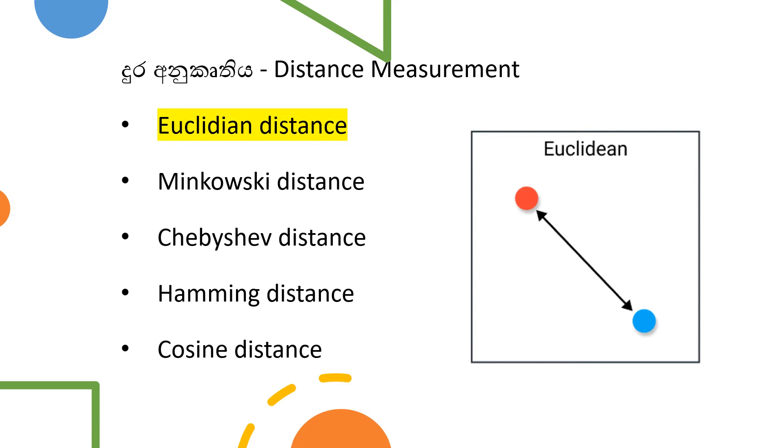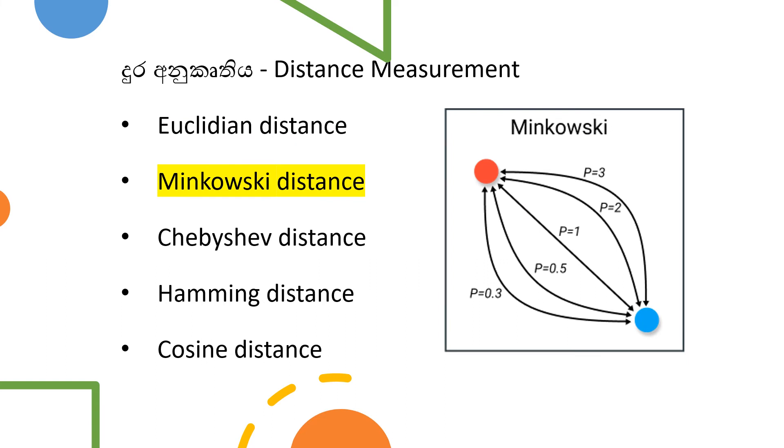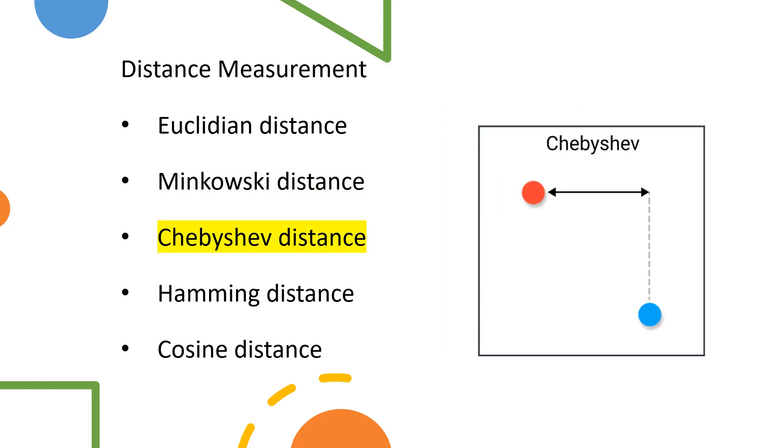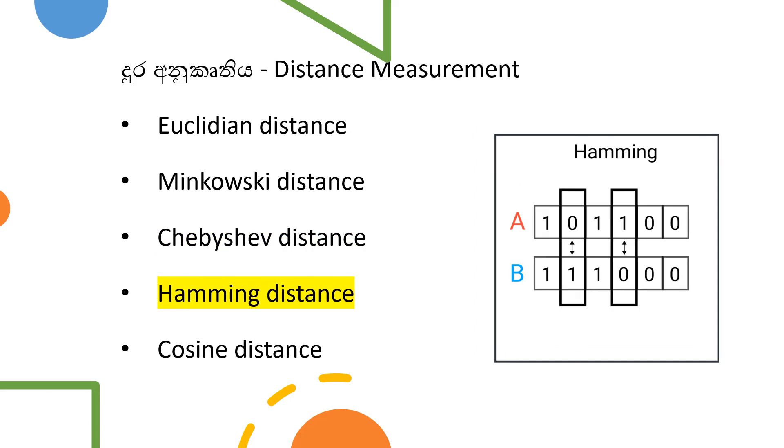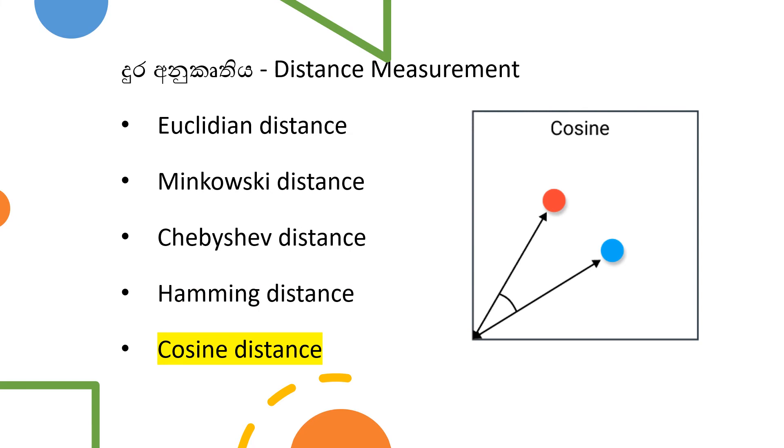The three most commonly used distance measurements are: Euclidean distance, which is the straight-line distance between points. Minkowski distance. Hamming distance, which calculates the bit positions where values differ - shown in this example with strings A and B. Cosine distance.